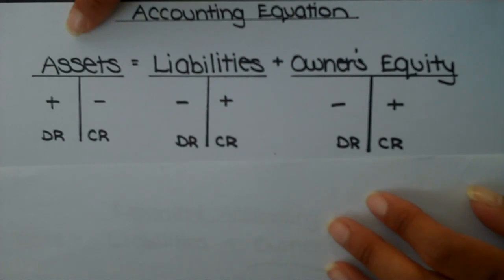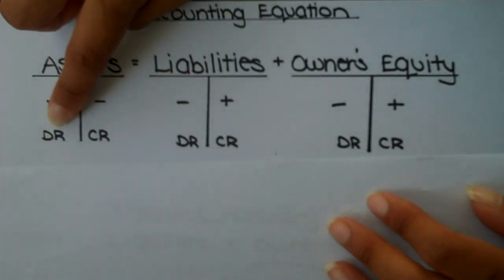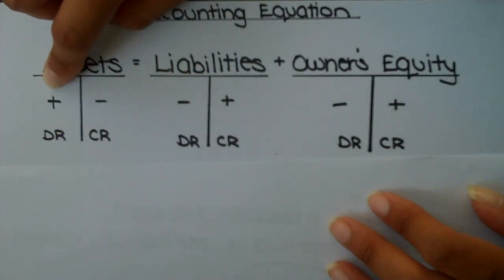Since it's on the left-hand side of our equation, we'll go ahead and say that it increases with an entry on the left-hand or debit side. So I went ahead and noted that with a little plus on the left-hand side or debit.